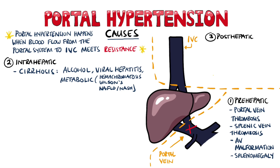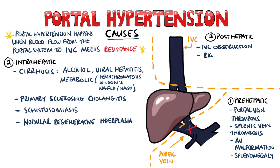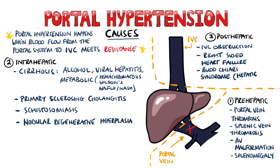In cirrhosis, the passage of blood from the portal vein into the hepatic veins is hindered because of fibrosis, and this increases the resistance to blood flow. Other intra-hepatic causes include primary sclerosing cholangitis, schistosomiasis because the eggs are deposited and lead to portal fibrosis, and conditions like nodular regenerative hyperplasia. Post-hepatic causes include inferior vena cava obstruction, right-sided heart failure, and Budd-Chiari syndrome, which is also known as hepatic vein thrombosis.